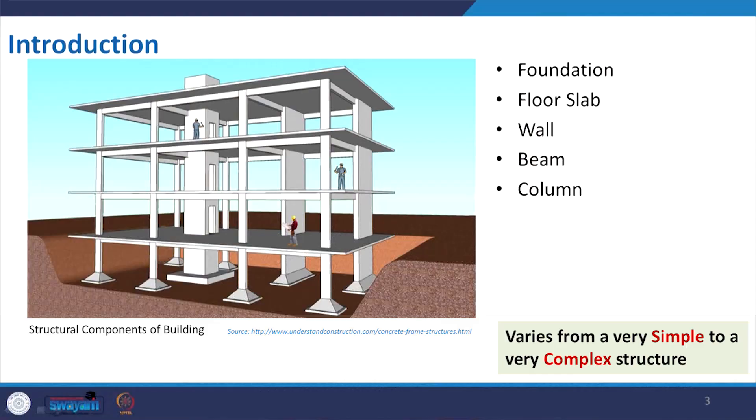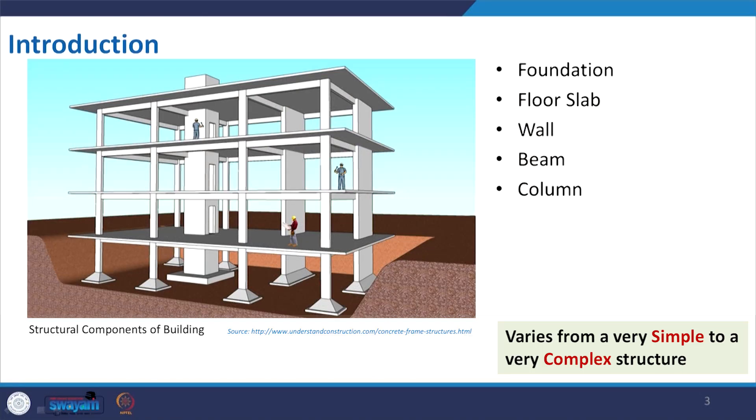Looking at the picture we hardly get any idea about the material to be used or other functions. The moment we make it a bit more complex, playing with different concepts and requirements — for example, a convention hall where we cannot put a column in the middle and it must be obstruction-free — then probably the structural composition will change. Whatever components make up a structure, they will vary from simple to complex structures.